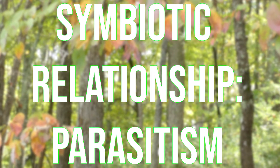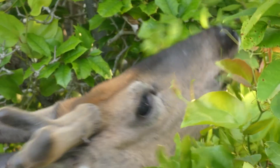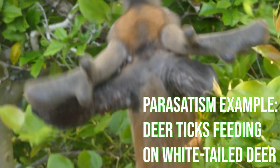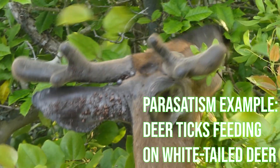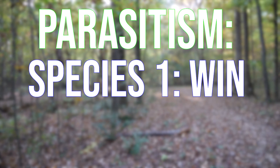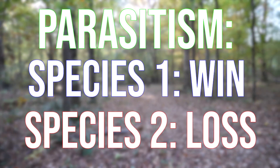The second type of symbiotic relationship that we'll talk about today is parasitism. And this, believe it or not, is actually the most common kind of symbiosis that we observe in the natural world. In a parasitic relationship, one of the organisms receives a benefit and the other is harmed by the interaction. So it's a win for one species and an 'ow' for the other.